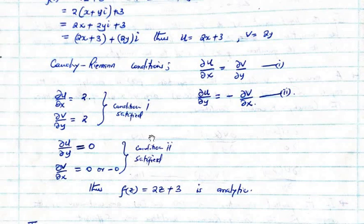So if both conditions are satisfied, then we say the function f of z which equals 2z plus 3 is analytic. As simple as that.